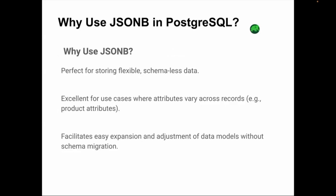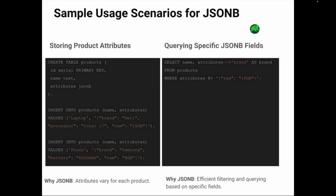Why should you use JSONB? It is perfect for storing flexible, schema-less data — particularly when product attributes vary across records. It allows for easy expansion and adjustment of data models without needing to go through schema migrations. This makes it ideal for e-commerce platforms or any application that deals with variable data. Let's go through some common scenarios when JSONB shines.